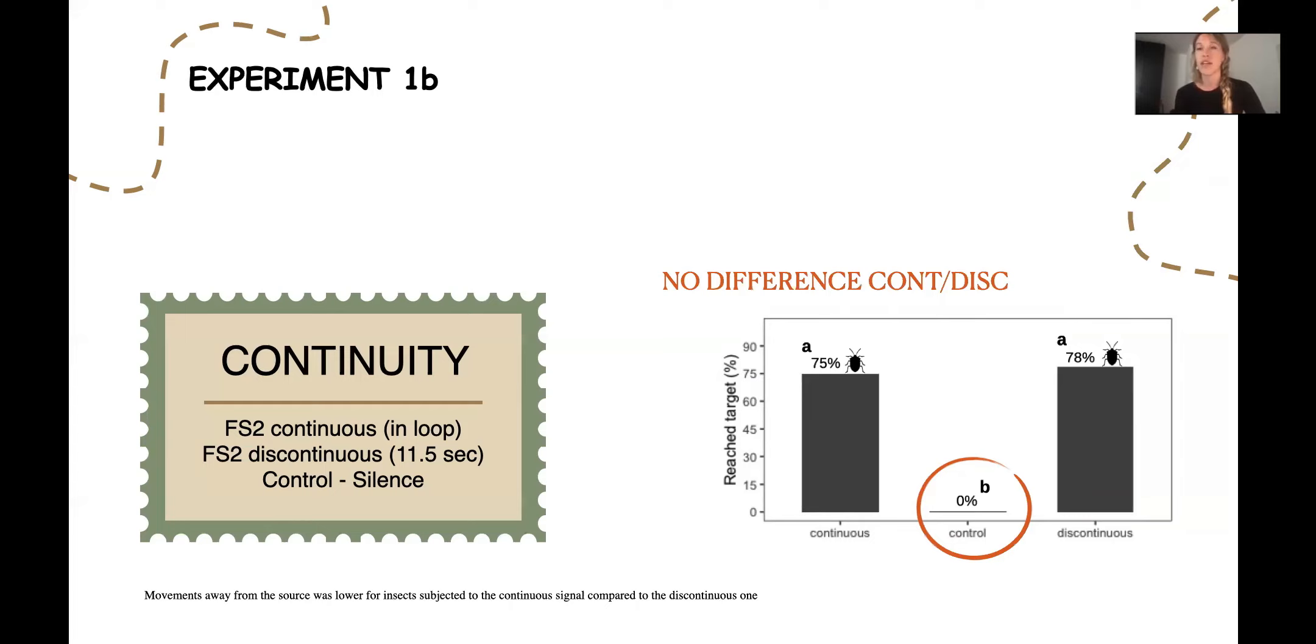As a response, we found that there was no difference between continuous and discontinuous. They were both attracted compared to the control. However, movements away from the source were lower with insects exposed to continuous signal compared to discontinuous. This means that when exposed to continuous, they were moving forward more times. When they were exposed to discontinuous, they were also doing some movements backwards. A possible explanation is that during continuous signaling males have better vibration contact with the sender and thus better directional accuracy. In this sense, we decided to use the continuous playback for the next steps of the trials.